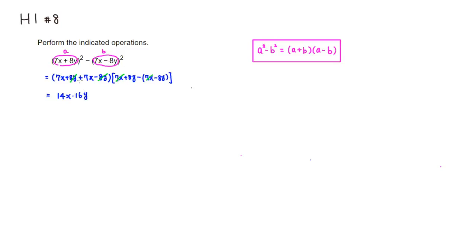What's 14 times 16? So 4 times 6 is 24, and 1 times 6 is 6, so 6 plus 2 is 8. 1 times 4 is 4, 1 times 1 is 1, so you have 4 here, 8 plus 4 is 12, and 1 plus 1 is 2. So this is going to be equal to 224xy.